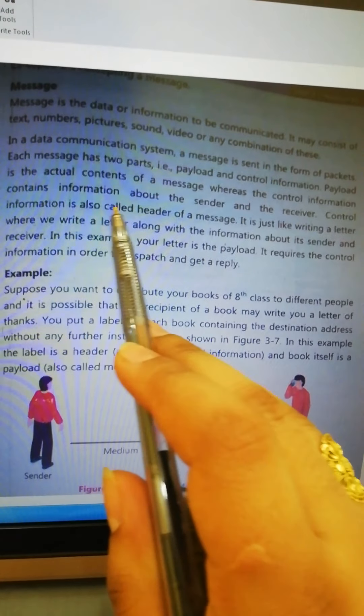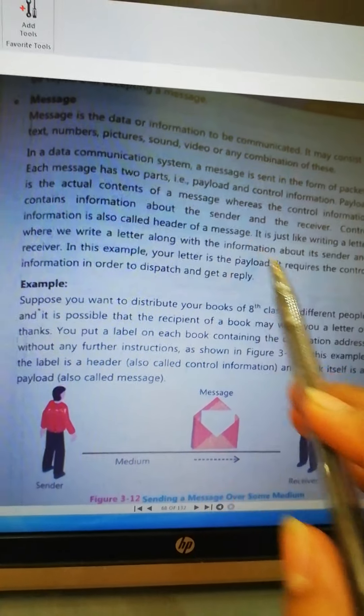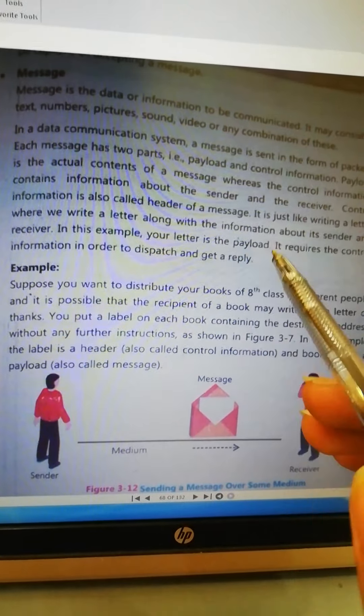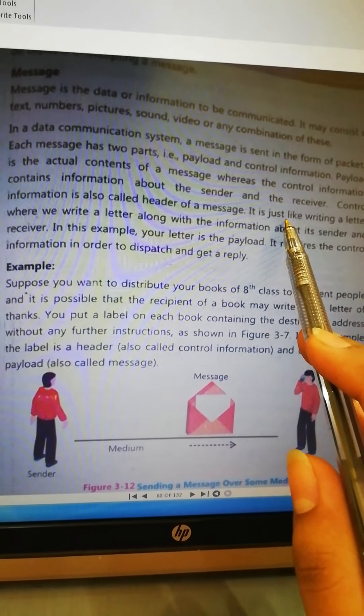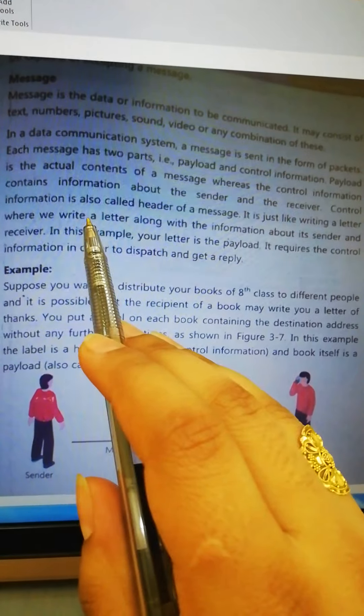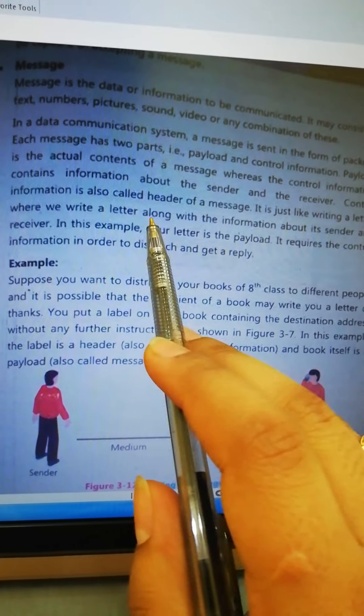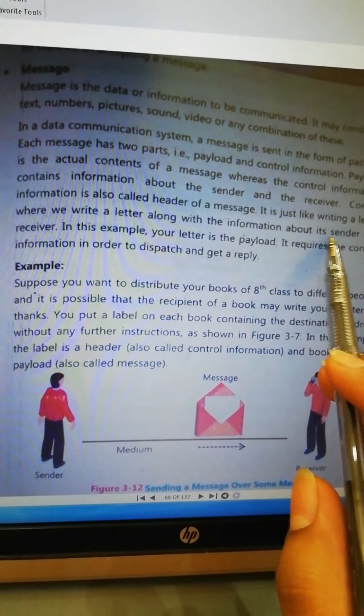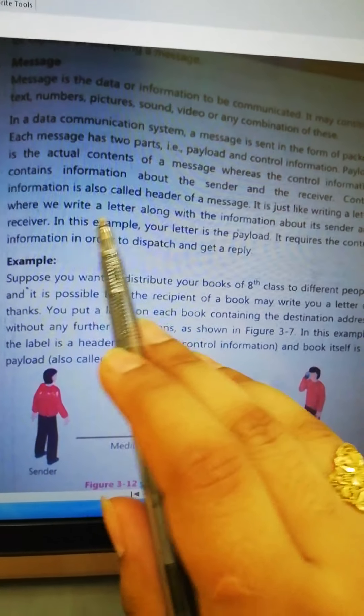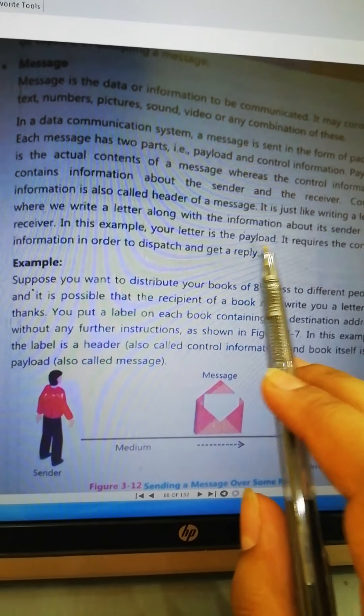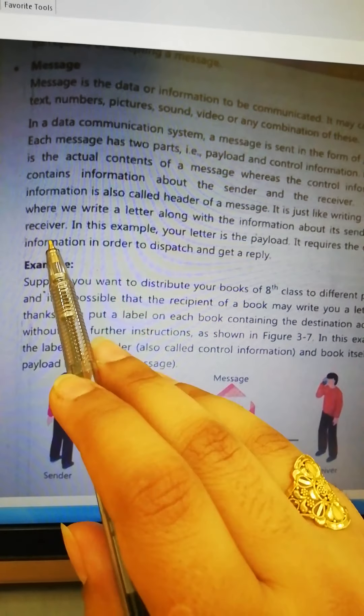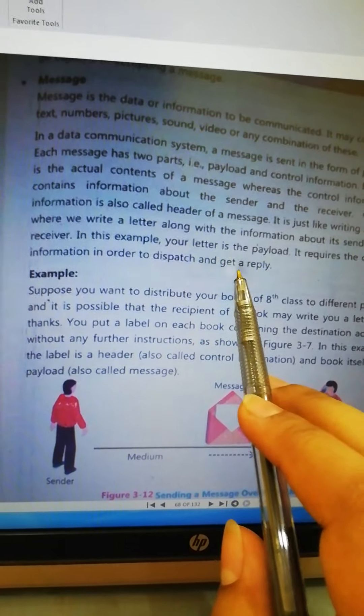Control information is also called the header of the message. It is just like writing a letter where we write a letter along with the information about its sender and receiver. In this example, your letter is the payload. It requires the control information in order to dispatch and get a reply.